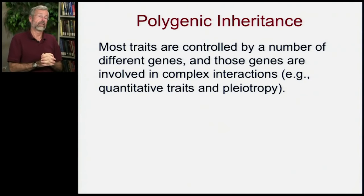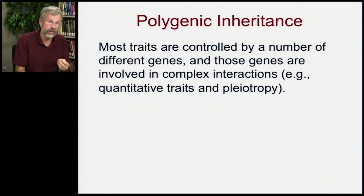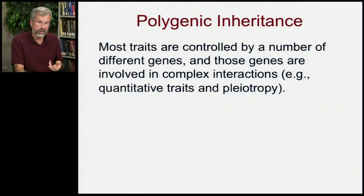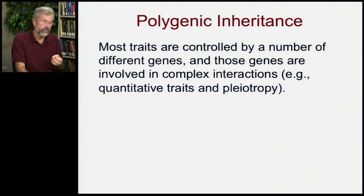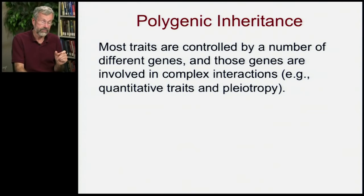The other thing that's very common in genetics is what's called polygenic inheritance. It turns out that most traits we're interested in are controlled by a number of different genes, and those genes are involved in very complex interactions. There are two terms to remember: quantitative traits and pleiotropy.